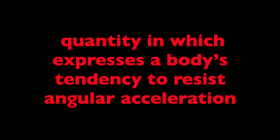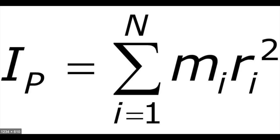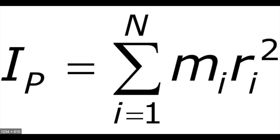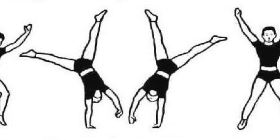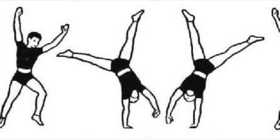Moment of inertia, otherwise known as rotational inertia, is a quantity that expresses a body's tendency to resist angular acceleration. It is the sum of the product of the mass of each particle with the square of its distance from the axis of rotation. To further explain this, we will discuss the beginner as well as the expert version of the cartwheel. The cartwheel is universally defined as a circular sideways handspring with both arms and legs extended.